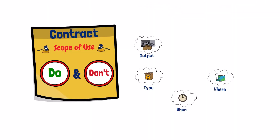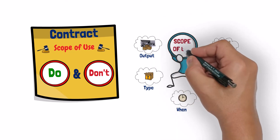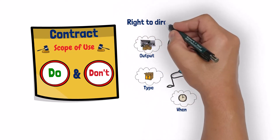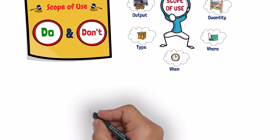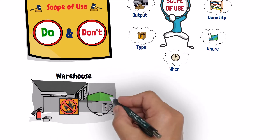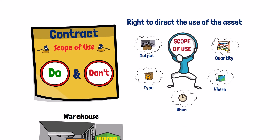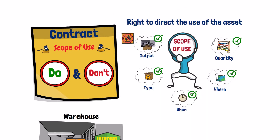If the contract includes a defined scope of use, then all decisions that involve directing the use of the asset should be exercised by the customer within that defined scope of use. Note that the defined scope of using the asset does not prevent the customer from having the right to direct the use of the asset. For example, a supplier might restrict a customer from storing flammable material in its warehouse to protect the supplier's interest. This restriction does not prevent the customer from directing the use of the warehouse, because the customer can still decide what goods to be stored, except for those prohibited by the supplier.